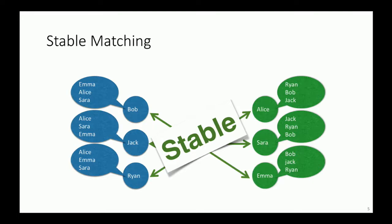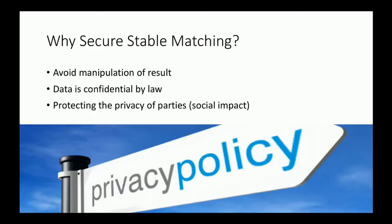So why is it important? There are multiple answers to that. First, there are multiple studies that show that if an individual knows the preferences of other people, he or she can manipulate the outcome in their favor by changing their own preference list. Second, in some scenarios the data is confidential by law so we need to respect that. And third reason is that of course privacy: no one likes to feel he or she wasn't their first choice.